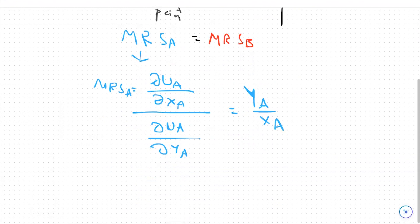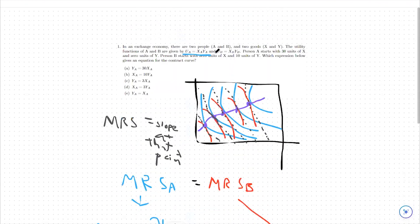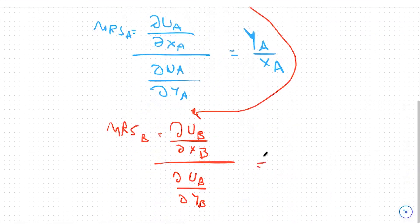We can do the same thing for MRSB. MRSB is going to be the utility of person B, the derivative of that with respect to first XB, and then we're going to put that over the derivative of utility B with respect to YB. I'm just looking at this utility function here instead - happens to be mirrored, happens to be the same in this case, doesn't always have to be the case though. So that's going to be YB over XB.